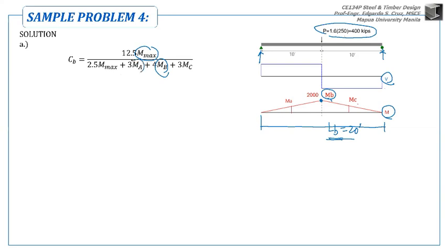Then MA, that is the moment at one-fourth of its Lb. Lb over 4, one-fourth. So that's MA. And what's MC? MC is at 3-fourths of Lb. And by symmetry, MA is just equal to MC. And since the moment diagram is linear, we could easily identify that MA and MC are just half of the 2,000.